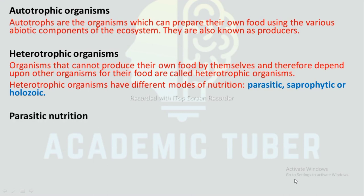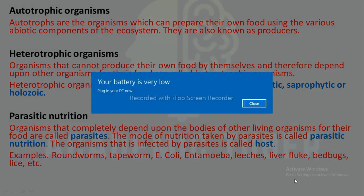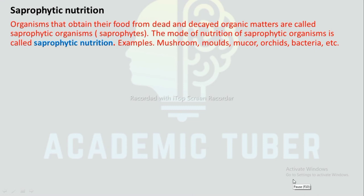Parasitic nutrition: Organisms that completely depend upon the body of other living organisms for their food are called parasites. The mode of nutrition taken by parasites is called parasitic nutrition. The organism that is infected by parasites is called the host. Examples include roundworm, tapeworm, E. coli, leeches, liver fluke, lice, etc. Saprophytic nutrition: Organisms that obtain their food from dead and decaying organic matter are called saprophytes. Examples include mushroom, mucor, orchid, bacteria, etc.